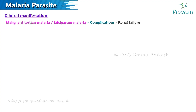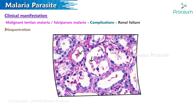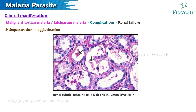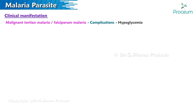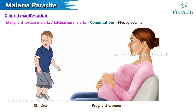Renal failure: sequestration plus agglutination leads to blockage of renal microvasculature, causing acute tubular necrosis. Hypoglycemia is most commonly seen in children and pregnant women due to reduced hepatic gluconeogenesis and increased glucose consumption.